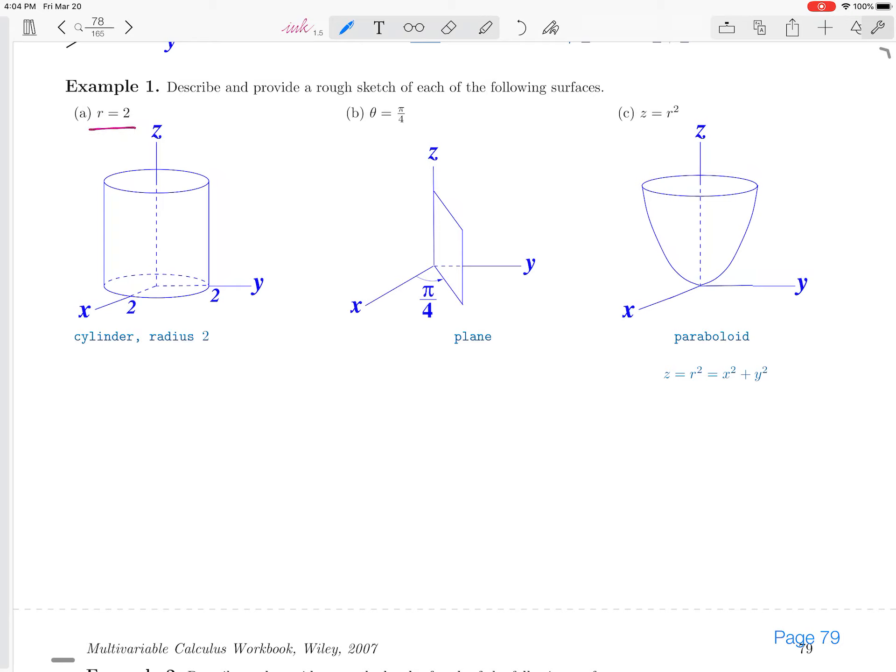So we looked at what does r equals 2 look like? That comes from cylindrical coordinates, and r is the distance away from the z-axis where a point lies.